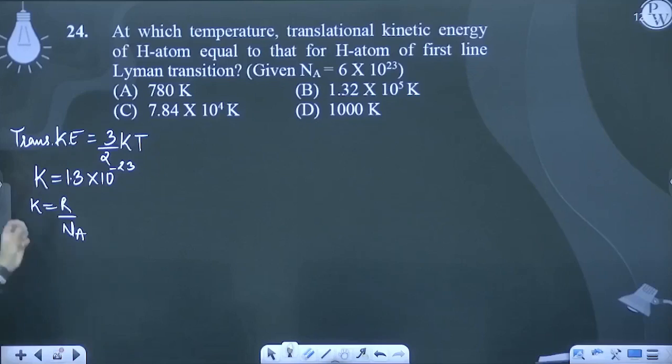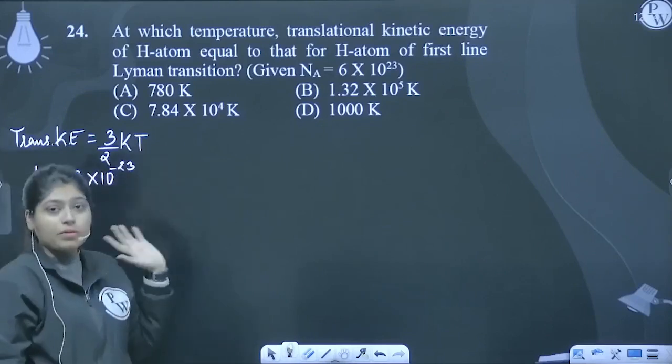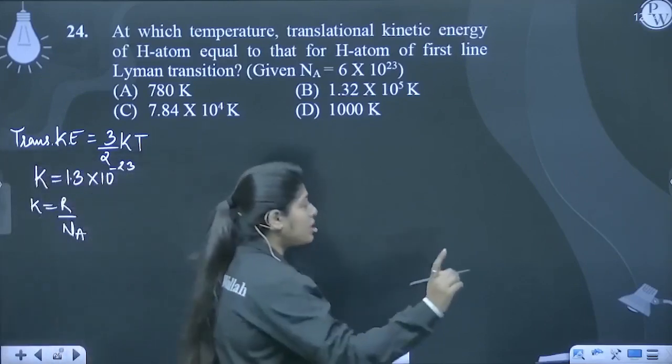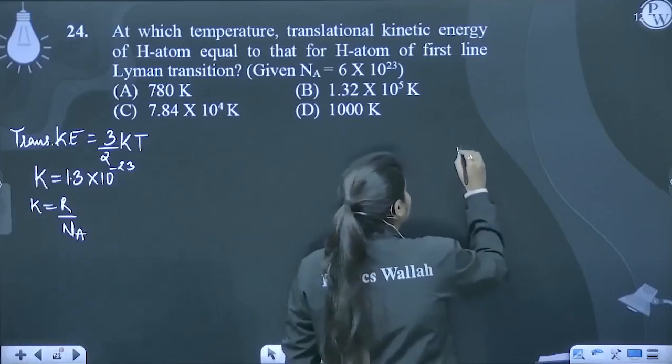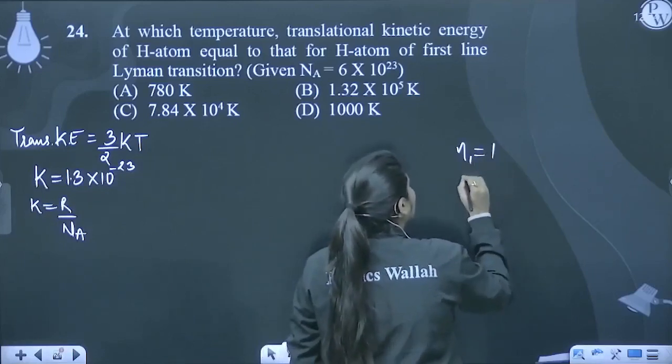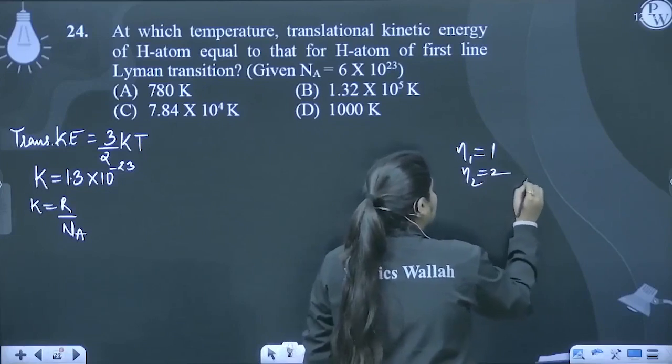Now, we are talking about which temperature will be equal to the hydrogen atom in the first line of Lyman transition. First line of Lyman transition, which will be when N1 will be 1 and N2 will be 2.